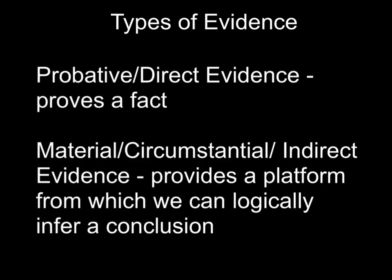Let's take a look at evidence in a crime scene. Two types of evidence are probative or direct evidence and material or circumstantial or indirect evidence. Probative evidence proves a fact. For example, the videotaping of the commission of a crime is probative evidence. Material evidence provides a platform from which we can logically infer a conclusion. 95% of all evidence given in a courtroom is material.